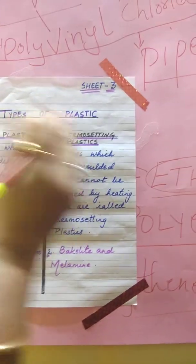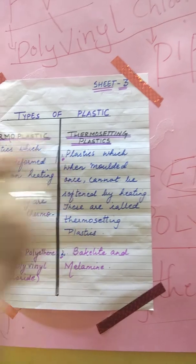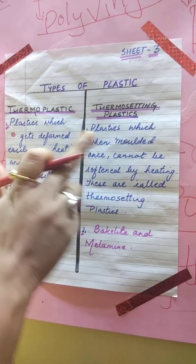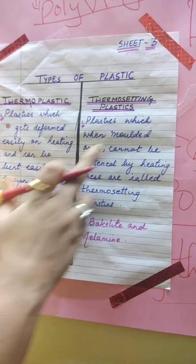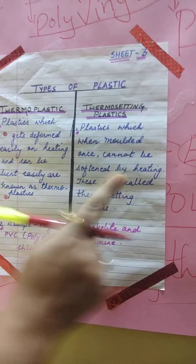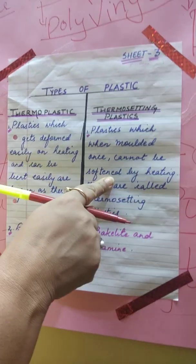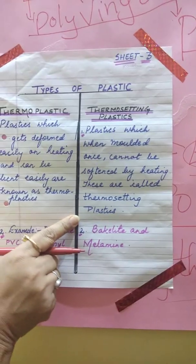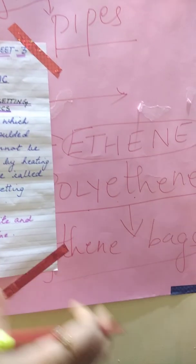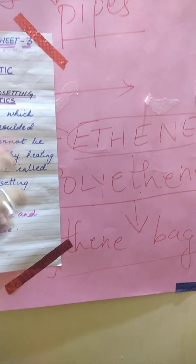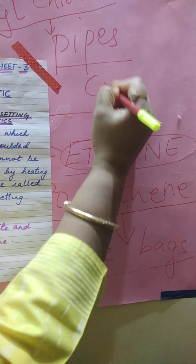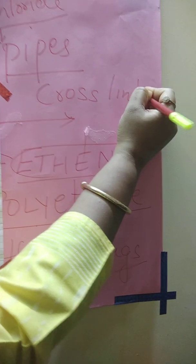Now we come to the next type of plastic, that is thermosetting plastics — exactly opposite. Plastics which, when molded once and given a shape, cannot be softened or deformed by heating are called thermosetting plastics. The type of arrangement here is cross-linked arrangement.